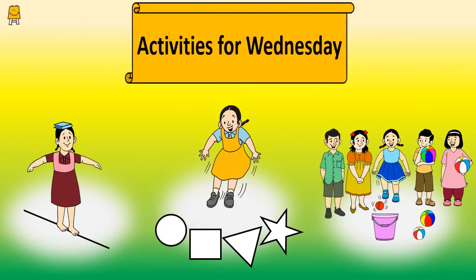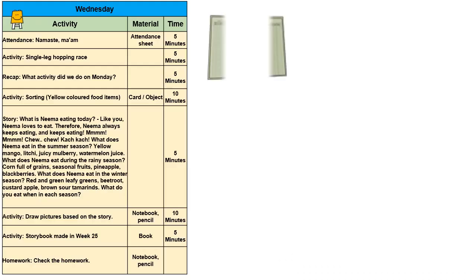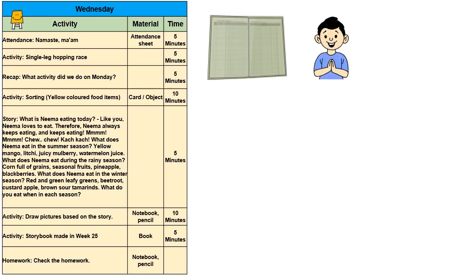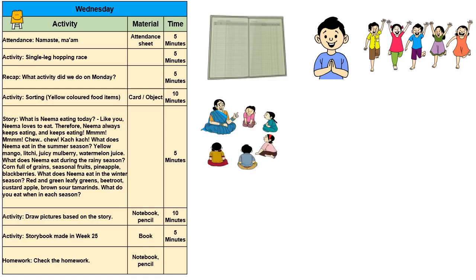Activities to be done on Wednesday. Attendance: inform the children to stand in their place when their turn comes and say 'Namaste ma'am.' Then encourage the kids to do a single leg hopping race. After this, ask the children about the activity done on Monday and discuss about it.